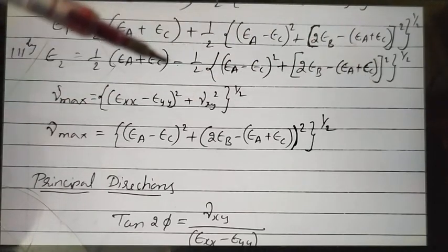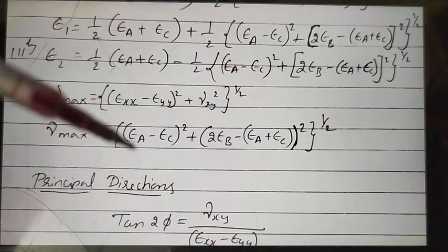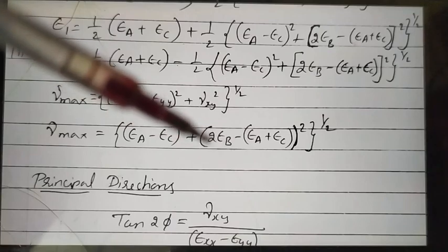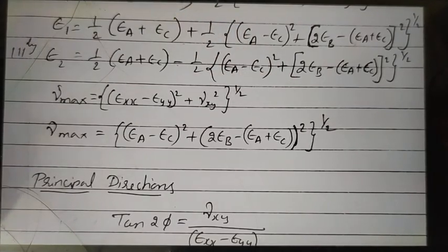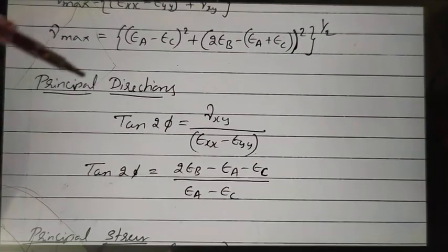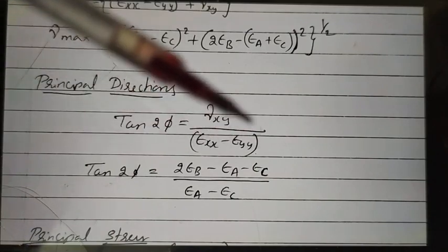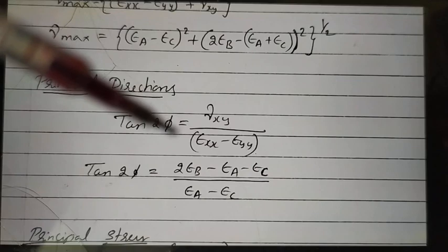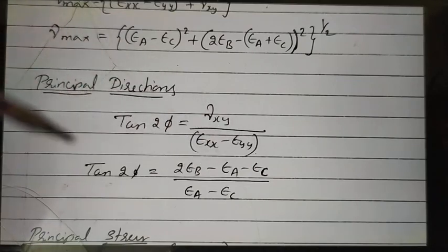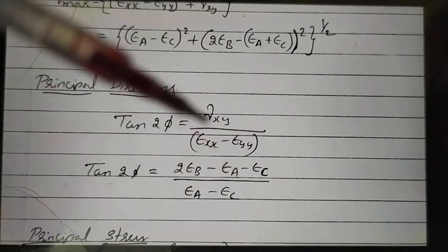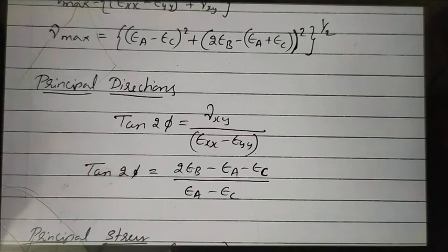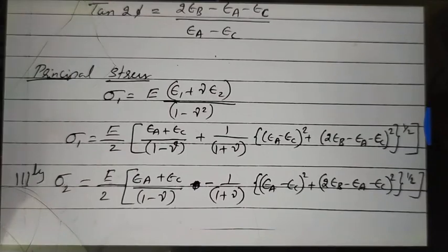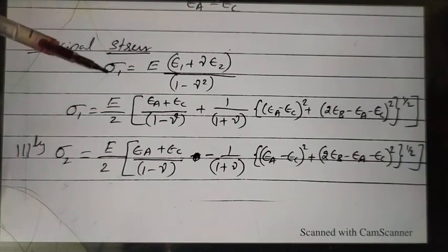The maximum shear strain gamma_max is found by substituting the relevant terms, giving: gamma_max equals √[(epsilon_a minus epsilon_c)² + (2·epsilon_b minus epsilon_a minus epsilon_c)²]. For the principal direction, using tan(2φ) equals gamma_xy / (epsilon_xx minus epsilon_yy), we substitute gamma_xy equals 2·epsilon_b minus epsilon_a minus epsilon_c, epsilon_xx equals epsilon_a, and epsilon_yy equals epsilon_c to obtain the principal direction angle.